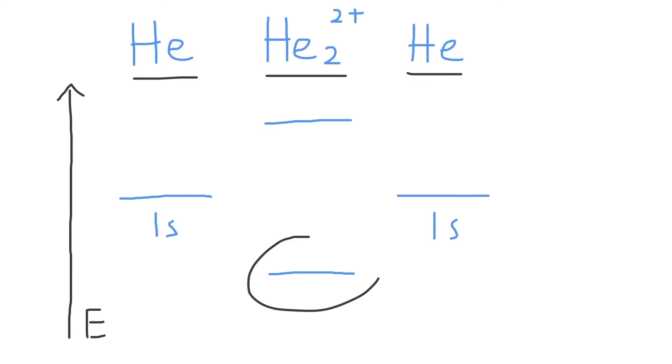The one that is lower in energy is a bonding molecular orbital, and we use the sigma 1s notation to represent this. The molecular orbital that is higher in energy is an antibonding molecular orbital called the sigma 1s star antibonding molecular orbital.